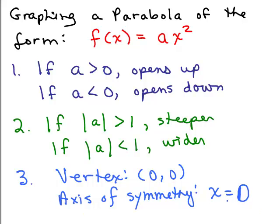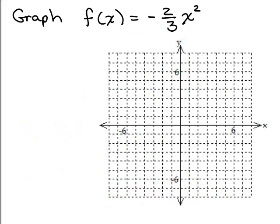Let's try another one: graph f of x equals negative two thirds x squared. You can plug in values for x to get enough points, or you can use what we just talked about to get an idea of what's going to happen. I know (0, 0) is the vertex — and also the x-intercept and y-intercept — and because it's negative it's going to open down. So I draw a little picture: vertex at (0, 0), opening down, and it will be wider because the absolute value of negative two thirds is less than 1.